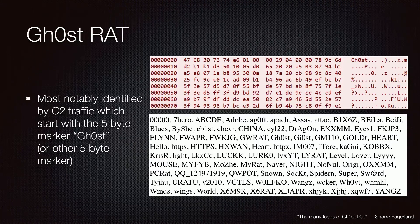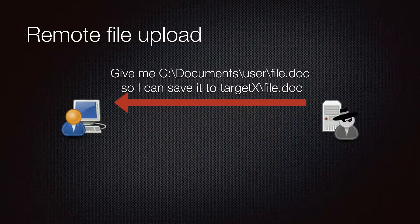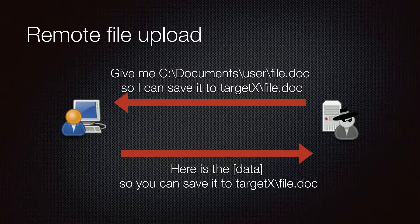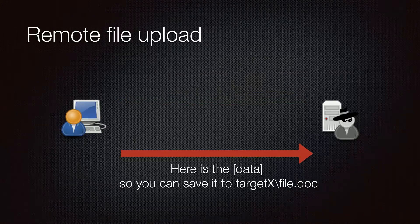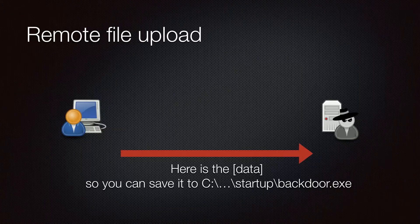Like Extreme RAT, GhostRAT also had a very interesting communication. When grabbing a file from the victim, it would say 'I want your file C:\Documents\user\file.doc — save it to targetx\file.doc.' The target responds 'okay, here's the data, remember you were going to save that to targetx\doc.' The server side then saves that data to whatever path is listed. So I thought: what if I just send it the data and a path that says 'save this executable to the program startup folder'? It would save it there, and the next time the machine starts up it would run this executable and I'd have execution. However, the startup path is different for different versions of Windows, so it's hard to reliably get execution that way. I wanted something better.